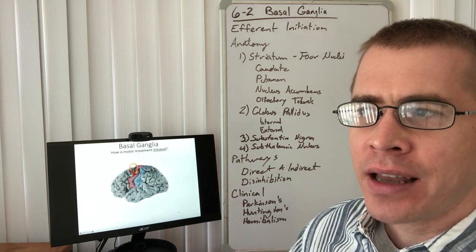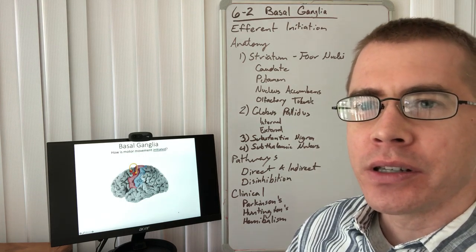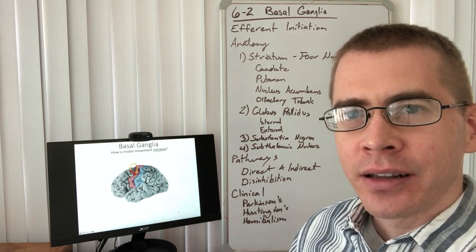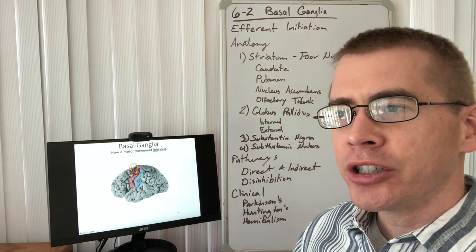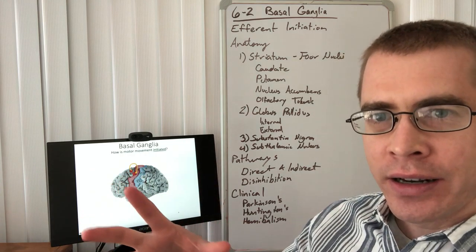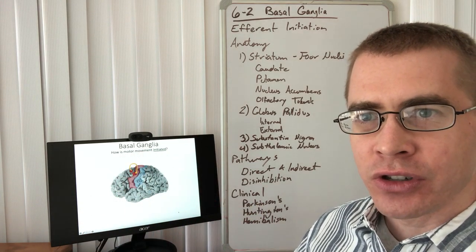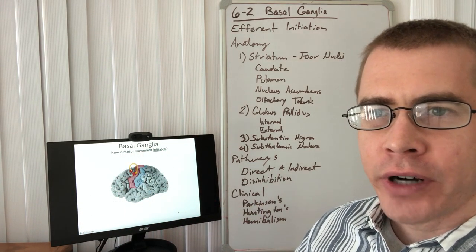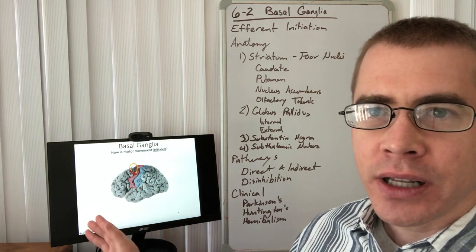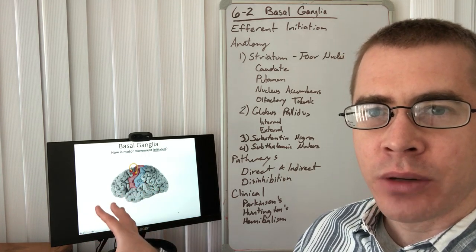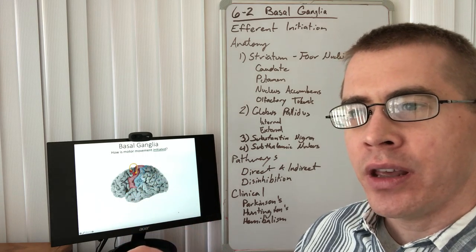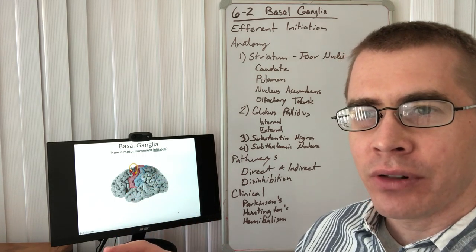The basal ganglia is kind of a misnomer, because ganglia are locations of neural cell bodies outside in the periphery, outside the central nervous system. So the correct name for this structure would be the basal nuclei, because the structures we're going to be talking about today are deep within the prosencephalon.